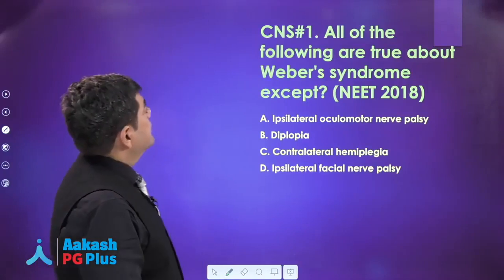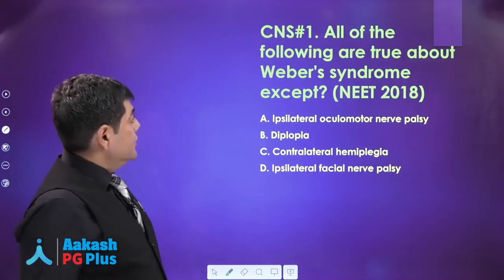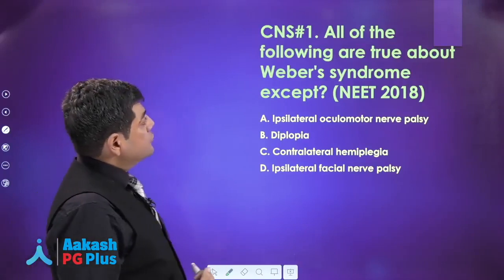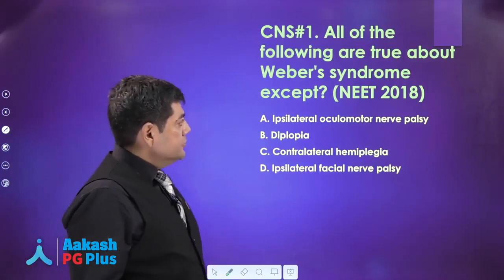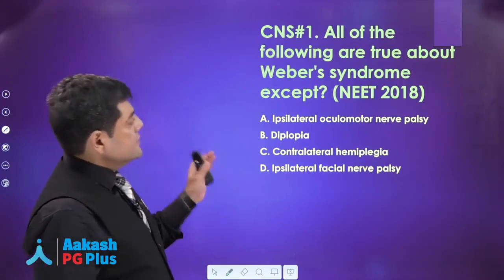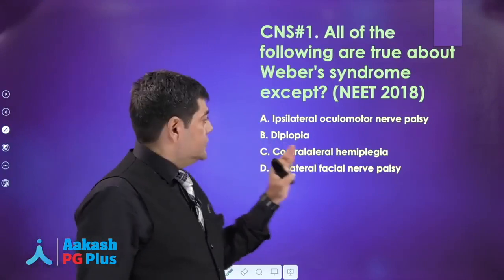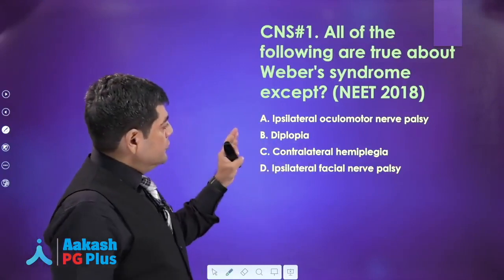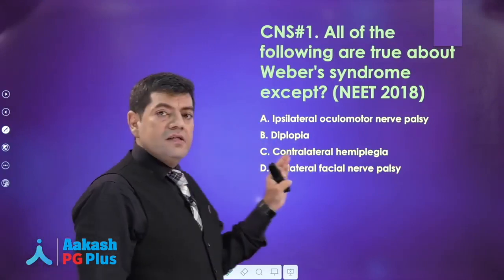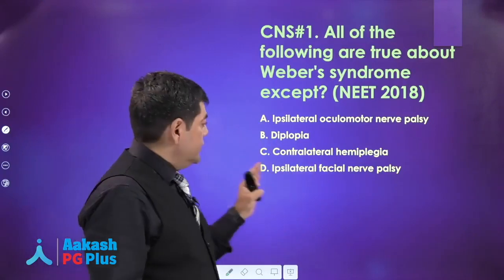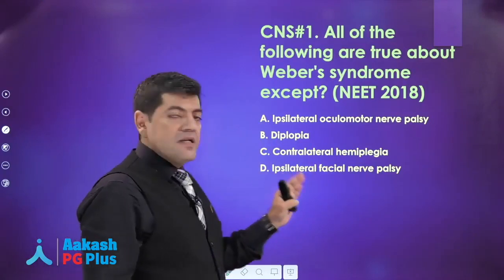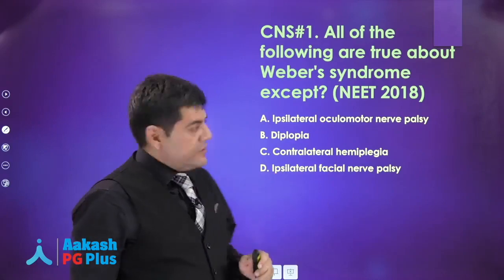Moving on, a neuro question now. All the following are true about Weber syndrome except — the choices are: ipsilateral third nerve palsy, diplopia, contralateral hemiplegia, and ipsilateral seventh nerve palsy.